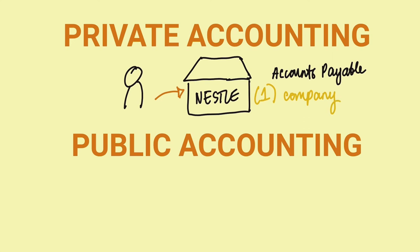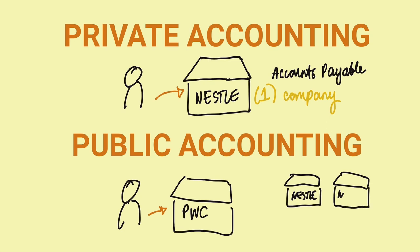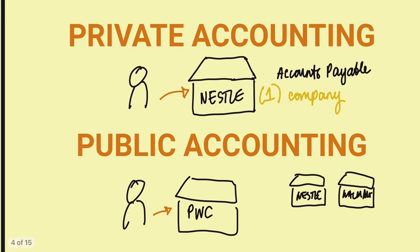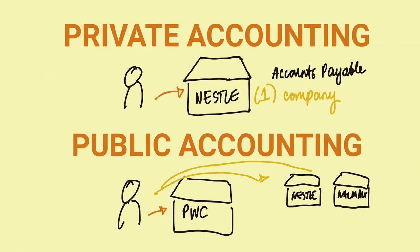Meanwhile, in public accounting, a good example is an accountant working for an audit company such as PwC, or PricewaterhouseCoopers. The accountant is working for one company, but the clients they're handling are different clients — they can be auditing Nestle, they can be auditing Walmart. Going back to the definition, they provide services for multiple clients. That's the difference between private and public accounting.